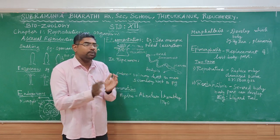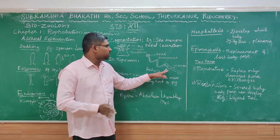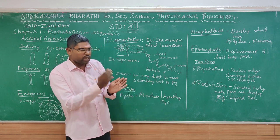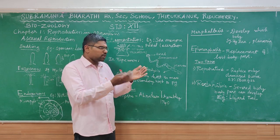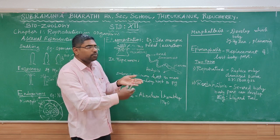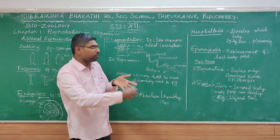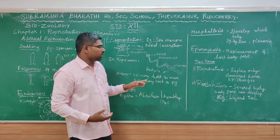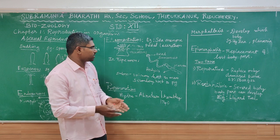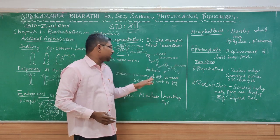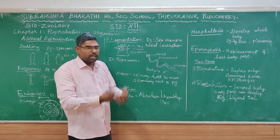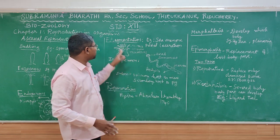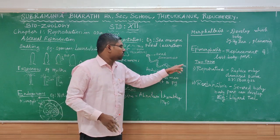At the posterior end, gravid proglottids and mature proglottids are found. The mature segments are called mature proglottids. The process by which the mature proglottid breaks off from the body of the tapeworm is called apolysis.